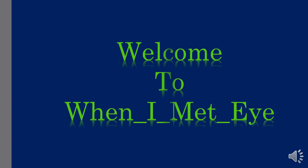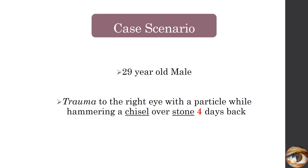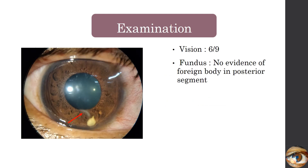Hi friends, welcome to our channel. Let's look at the case scenario. A 29-year-old male presented to the emergency with a history of trauma to the right eye with a particle while hammering a chisel over stone four days back. On examination, vision in the right eye was 6/9. Anterior segment showed a self-sealed corneal wound.